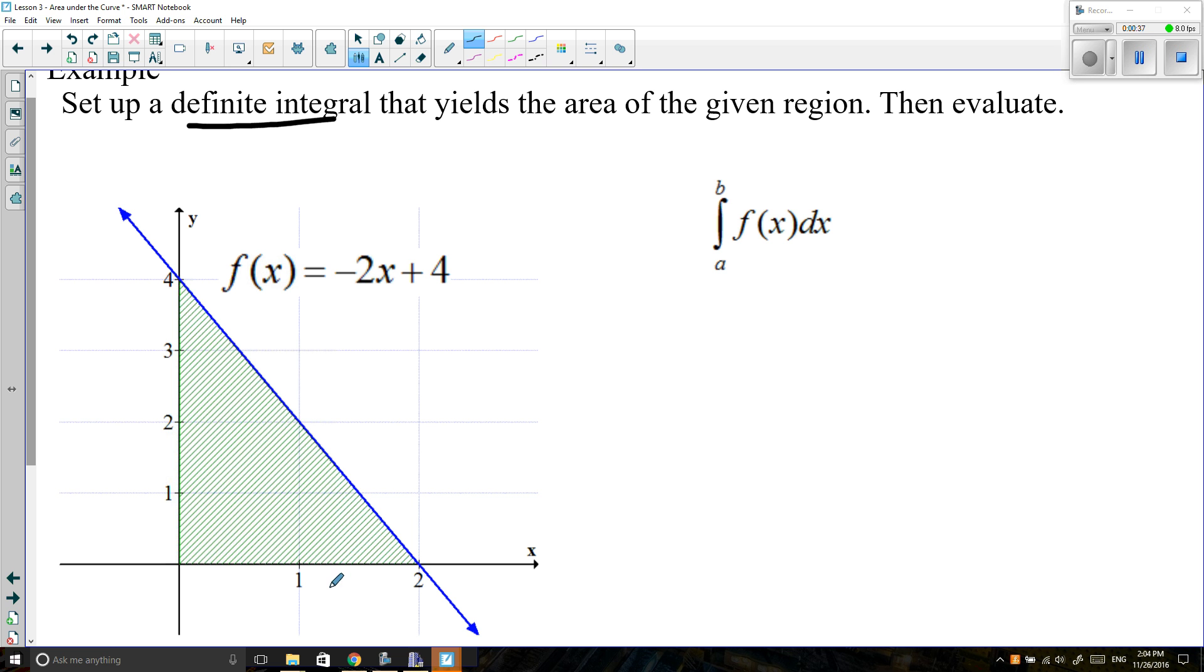First thing I need to do is define my a and b values. So a is my lower limit and b is my upper limit. We're integrating with respect to x, so I want to focus on just the x values here. My lower limit is when a is equal to 0. Then I'm going all the way up to when b is equal to 2. So I'm not going past positive 2. So I have my lower and my upper limit.